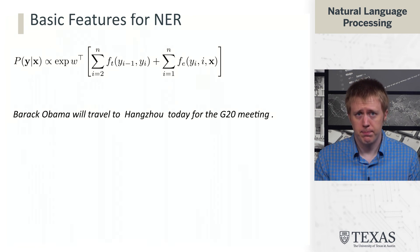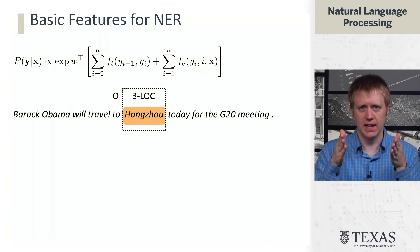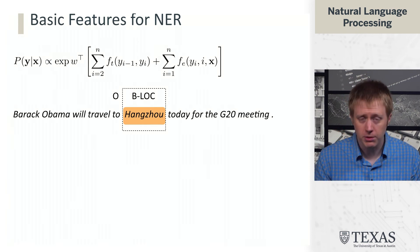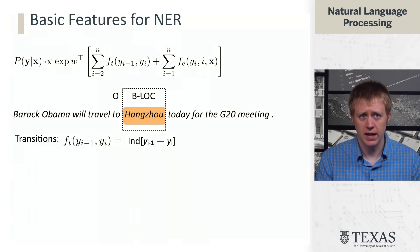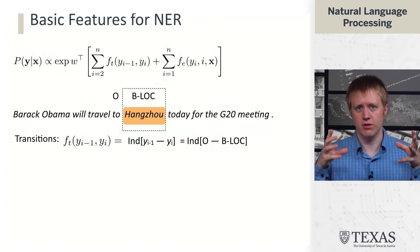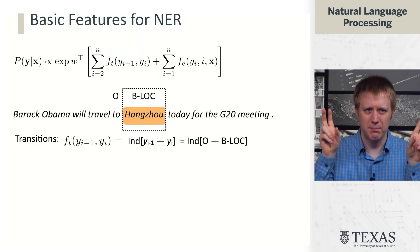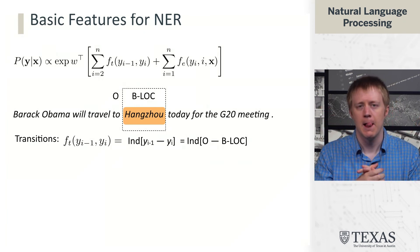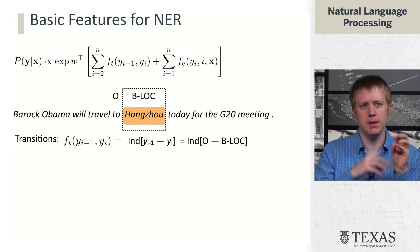The basic idea behind these features is that when we're thinking about tagging Hangzhou as B-LOC, there are a couple of things that are important. The transitions really need to look at what the previous tag was. What we use here is an indicator feature on the pair of tags. Indicator features take this information and put it into what we can think of as a bag-of-words space, but very extended. There's going to be some weight associated with this particular feature.